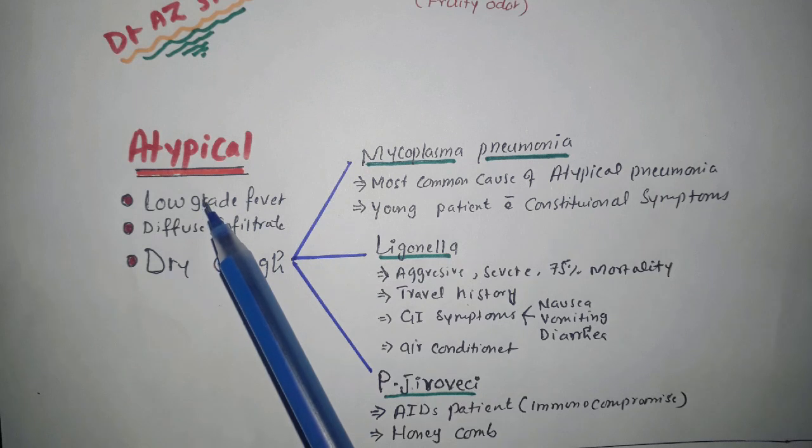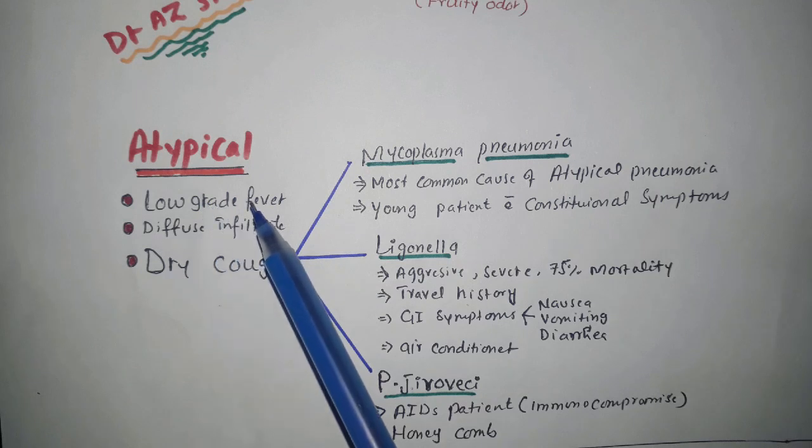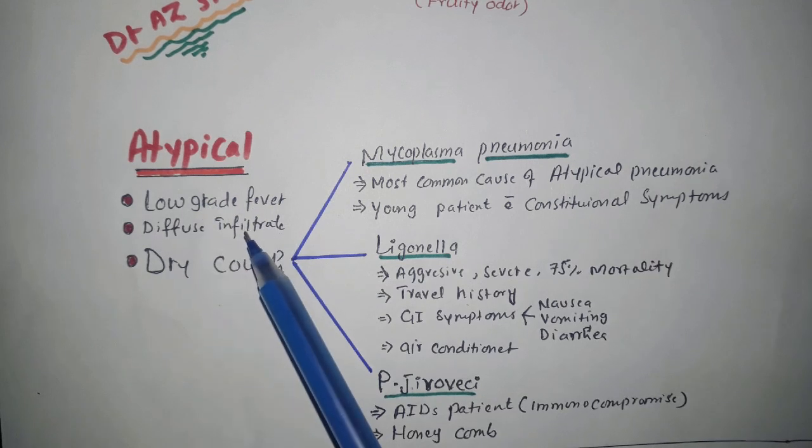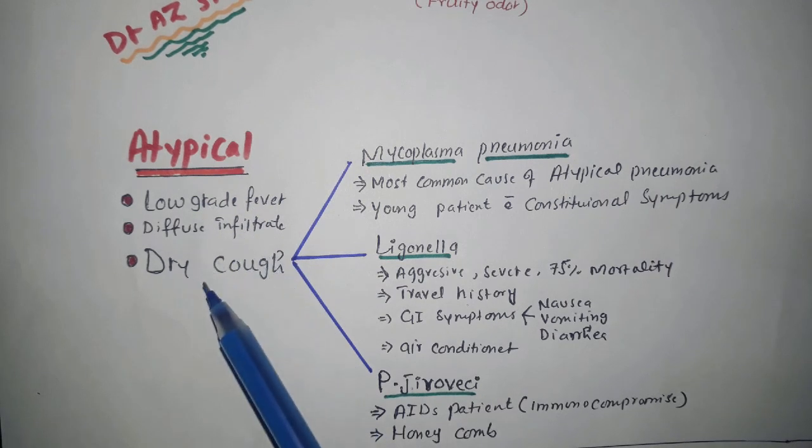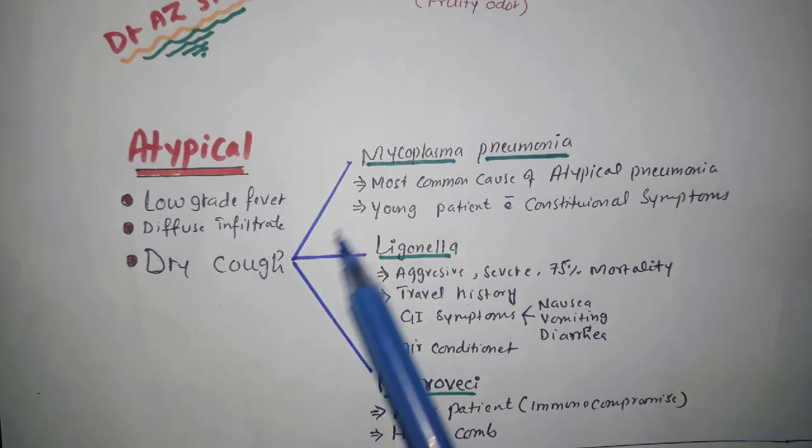Atypical pneumonia. There will be low grade fever, diffuse infiltrate, and dry cough.